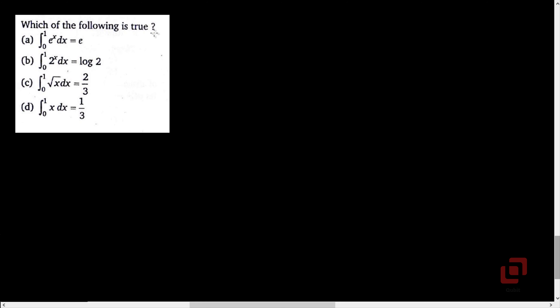Next question: which of the following is true? We have no other option but to check each one by one. Starting with option A: the integral of e^x is e^x, with limits 0 and 1. The upper limit gives e, the lower limit gives e^0 which is 1, so the value is e minus 1, which is not equal to e. Therefore A is not true.